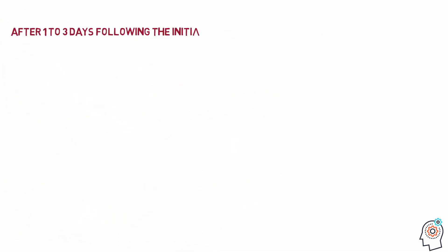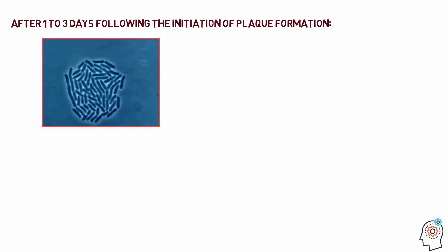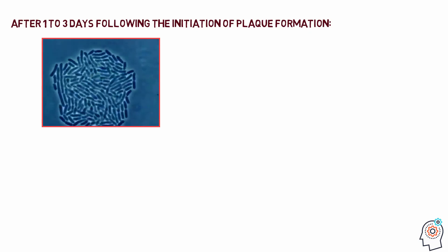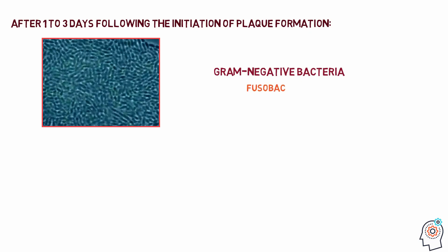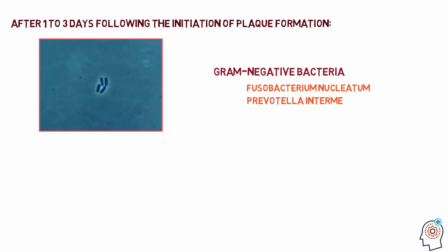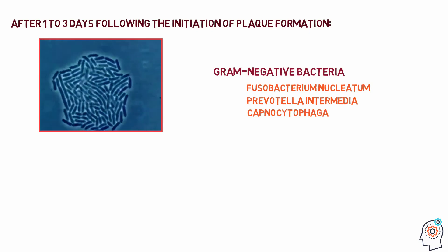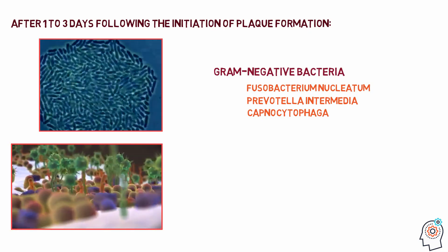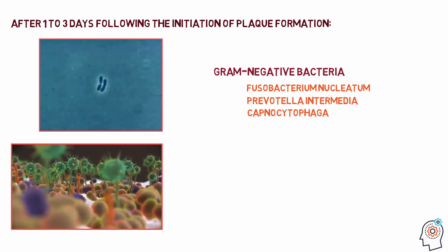Bacteria cells interact with the pellicle components, enabling plaque to firmly adhere to the tooth surface. After one to three days following initial plaque formation, the first bacterial colonies start to multiply and extend, and new bacteria species start to colonize the plaque. These new species include gram-negative bacteria such as Fusobacterium nucleatum, Prevotella intermedia, and Capnocytophaga. Substances produced by the already accumulated bacteria enrich the bacterial environment, making it favorable for the growth of other species.